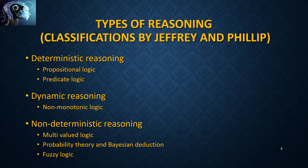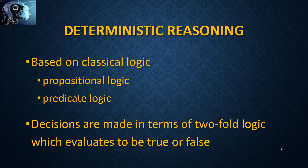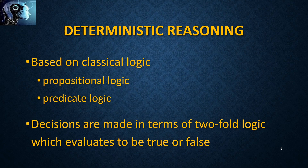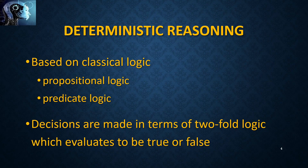First, we will see what deterministic reasoning is. It is based on classical logic — in other words, it is based on propositional logic and predicate logic. There are many other logics in classical logic, but basically we use these two here. It means the output or conclusion always has two values: true or false. If the conclusion has more than two values, it is not considered deterministic reasoning.